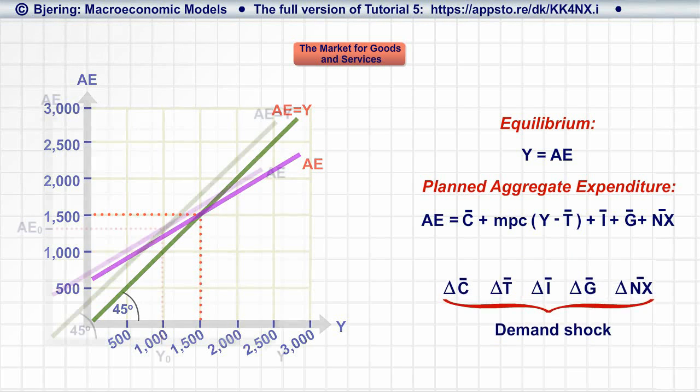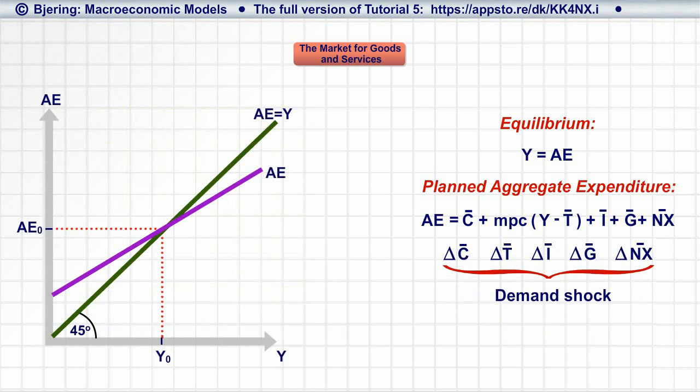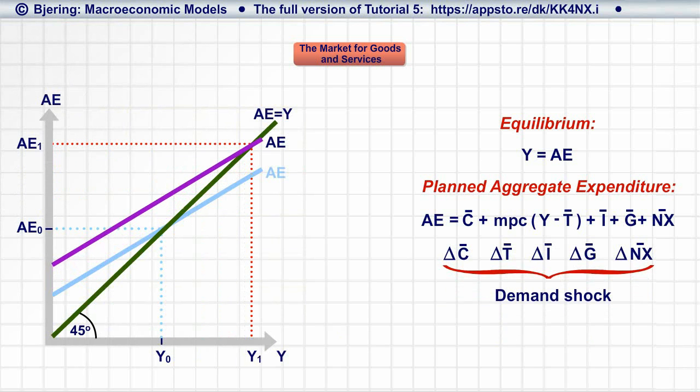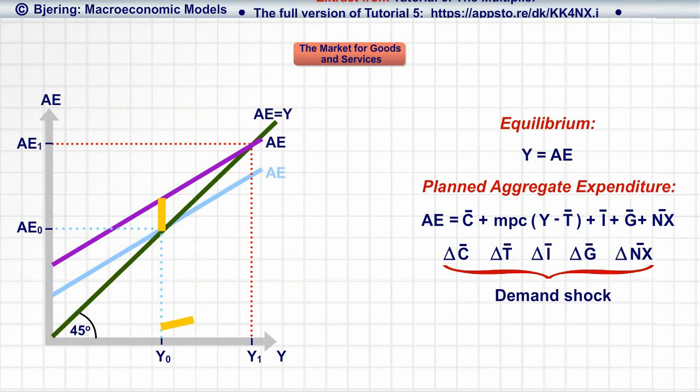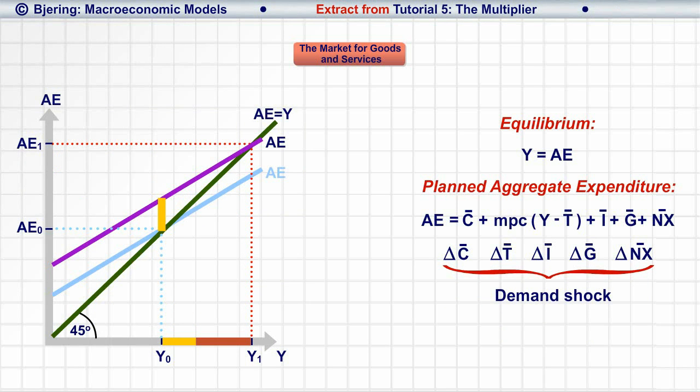Assume that the economy is subject to a positive demand shock, increasing exogenous demand and aggregate expenditure as indicated by the vertical distance between the two AE curves. It appears that the increase in aggregate expenditure generates an increase in equilibrium income and output that is much larger than the original increase in demand.